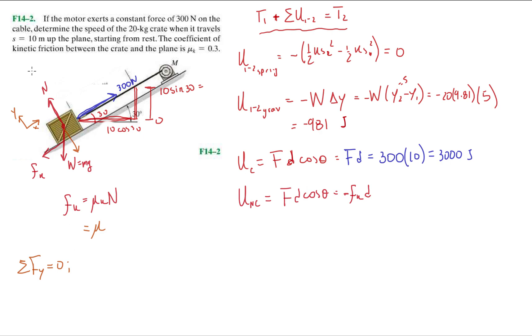Let me prove that real quick in case you need a refresher. In the y direction there's no acceleration, so ΣF_y = 0. This will be the normal minus mg cos(30) equals zero.